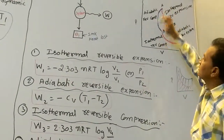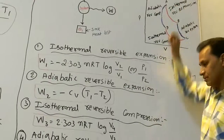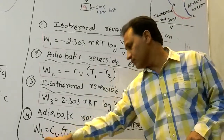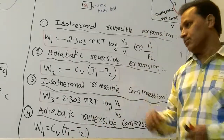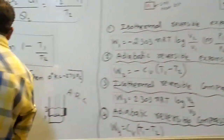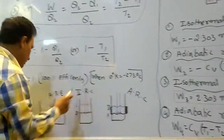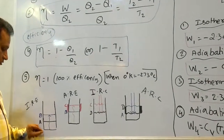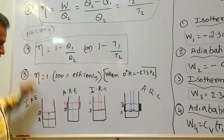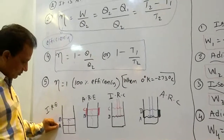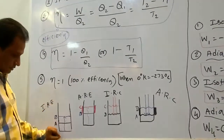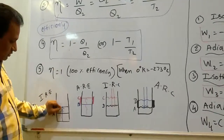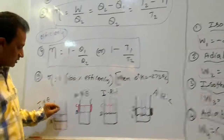Adiabatic reversible compression: more work is done on the system, so W4 = plus Cv(T1 minus T2). In the graphical presentation, isothermal reversible expansion means the gas is expanded from A to B at a constant temperature — this is the isothermal reversible expansion stage.